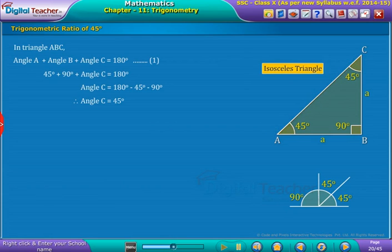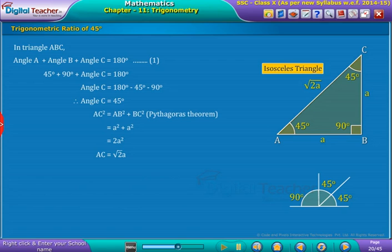To find the other side of the triangle, we use Pythagoras theorem as shown on the screen. Then finally, we obtain the value of AC.